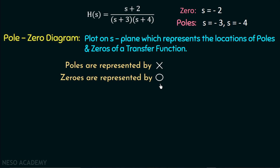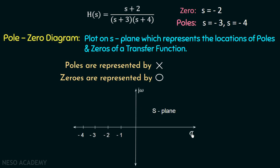To represent the poles and zeros of this transfer function on a pole-zero diagram, we use the s-plane where the x-axis is the sigma axis (real part of s) and the y-axis is the jω axis (imaginary part of s). We place a circle at s = −2 to represent the zero. Similarly, we place a cross at s = −3 and a cross at s = −4 to represent the two poles. This is the pole-zero diagram for this transfer function.